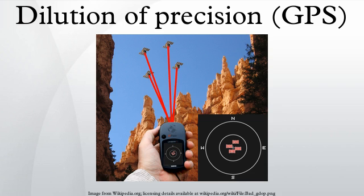Dilution of precision, or geometric dilution of precision, is a term used in satellite navigation and geomatics engineering to specify the additional multiplicative effect of navigation satellite geometry on positional measurement precision.